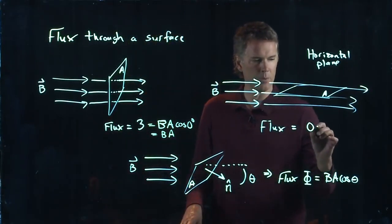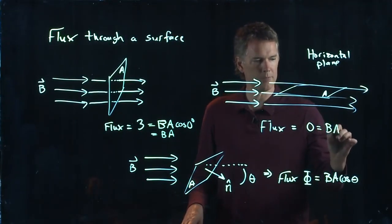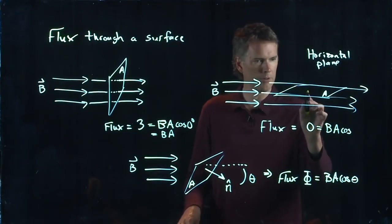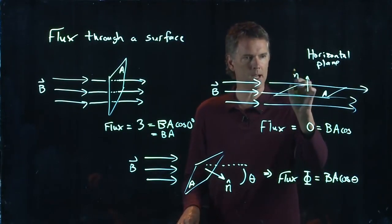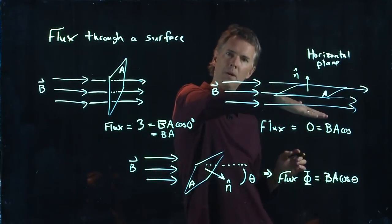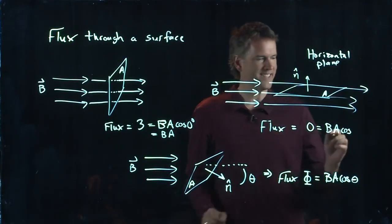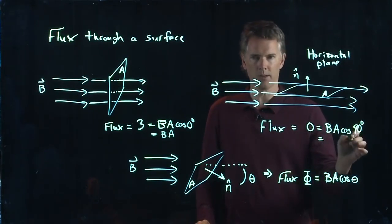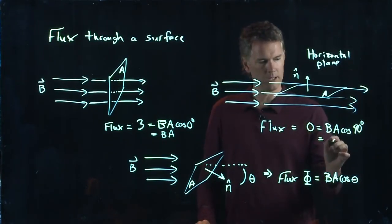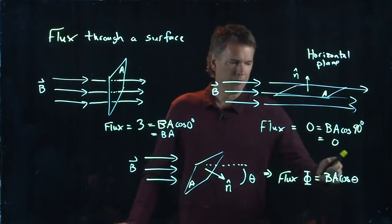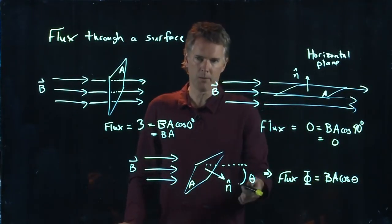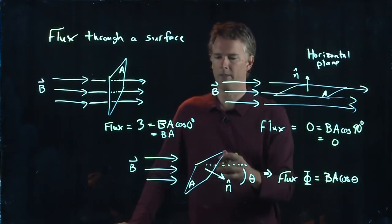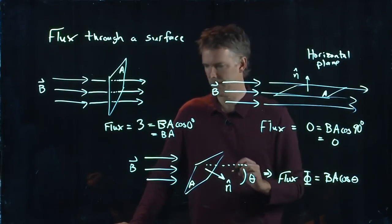In this case, it would be B times A times the cosine of what? Well, the surface normal would be pointing up. And so the angle between B and the surface normal is 90 degrees. And we know that 90 degrees, when you take the cosine of it, you get zero. And so for some angle in between, like we have here, it's just B times A times cosine of that angle, cosine of theta.